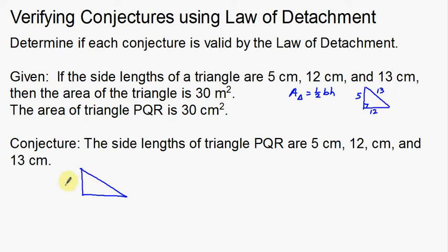For example, I might have side lengths of 6 and 10. If I have these two side lengths of 6 and 10 — base times height — 6 times 10 is 60, and 60 divided by 2 is 30. So this triangle also has an area of 30 centimeters squared. This conjecture is not really valid, because I just came up with another example of a triangle with an area of 30 centimeters squared but it doesn't have sides of 5, 12, and 13.